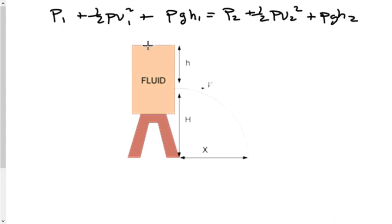Assume that this is open to the atmosphere so that the pressure one here does equal pressure two here. So then we can kind of cross off our pressure one on this and pressure two.